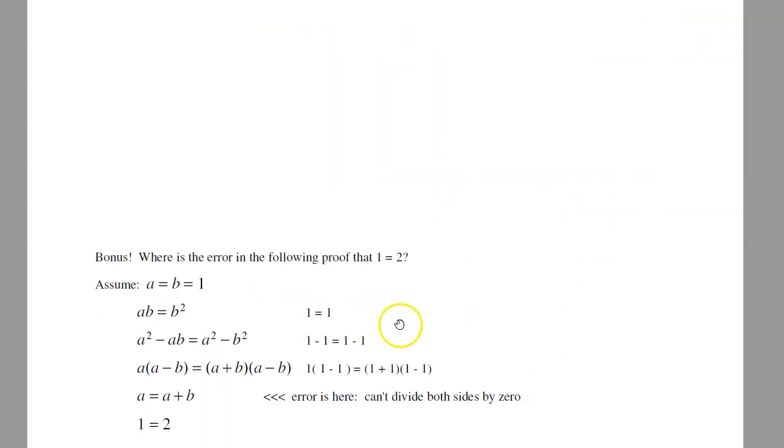And the bonus question, if A equals B equals 1, I've got 1 equals 1, that's okay. Subtract 1 on both sides, I have 1 minus 1 equals 1 minus 1, that works. Factor it, 1 times 0 is 2 times 0, that's okay. I can't cancel the 0s though. If I do, I get that 1 equals 2. That just says you can't divide by 0. And that's quiz number 2 for ECE 320.